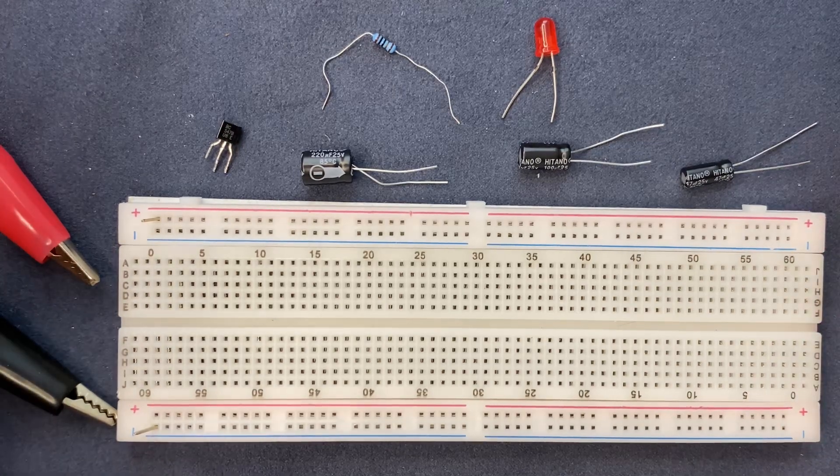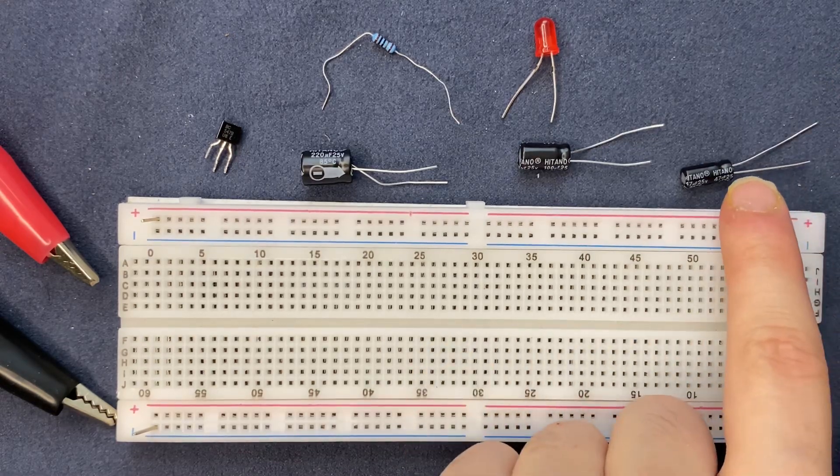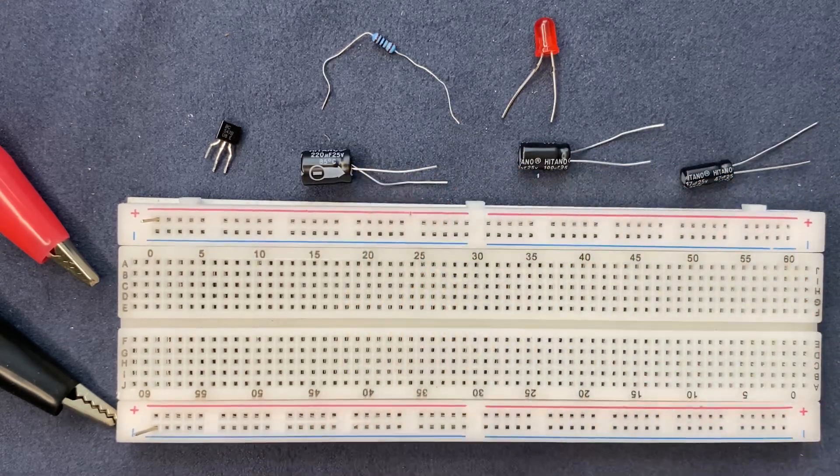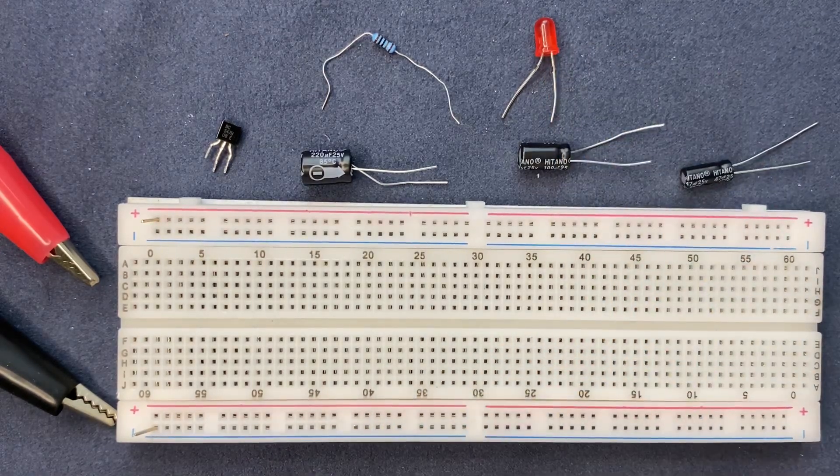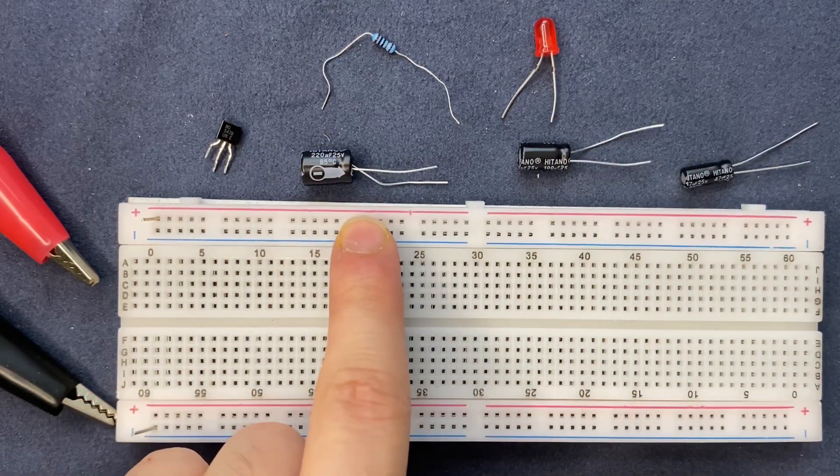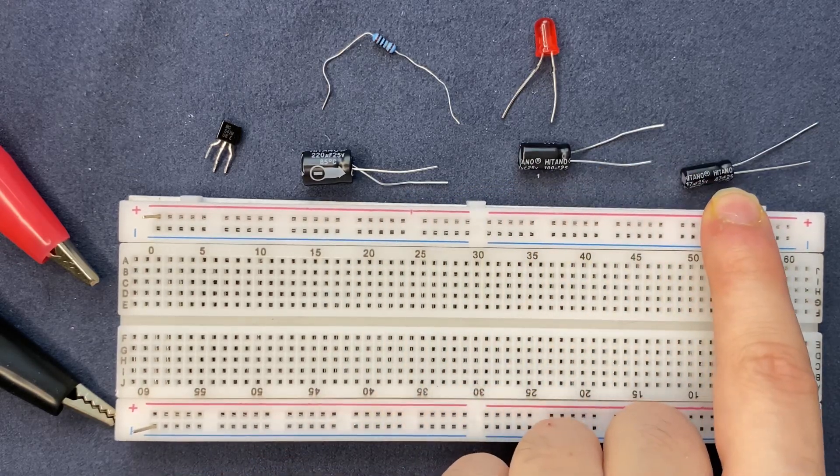These are the components which I will be using to do this experiment. We need a breadboard. I'm using three capacitors with three different values to determine the LED flashing rate. One of them is 220 microfarad, another one is 100, and the last one is 47 microfarad.